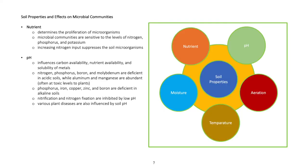Soil properties and effects on microbial communities. Nutrient determines the proliferation of microorganisms. Microbial communities are sensitive to the levels of nitrogen, phosphorus, and potassium. Increasing nitrogen input suppresses the soil microorganisms.